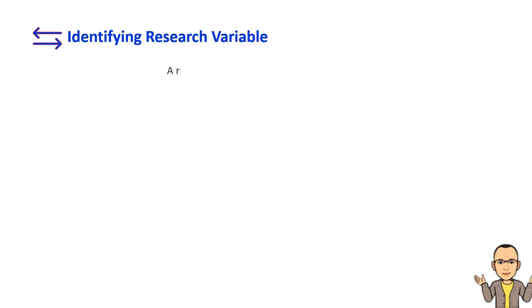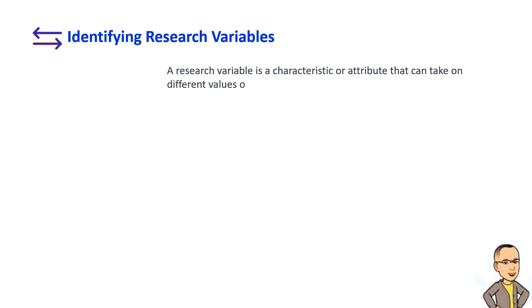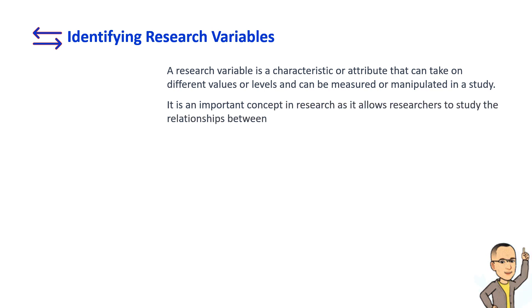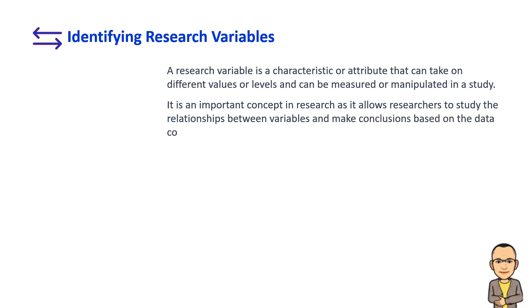A prerequisite of writing a research title is identifying research variables. A research variable is a characteristic or attribute that can take on different values or levels and can be measured or manipulated in a study. It is an important concept in research as it allows researchers to study the relationships between variables and make conclusions based on the data collected.